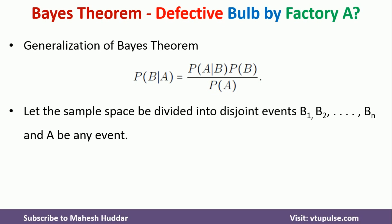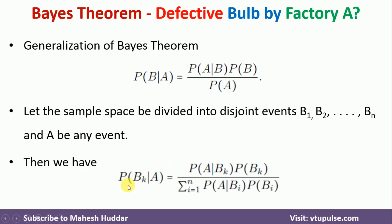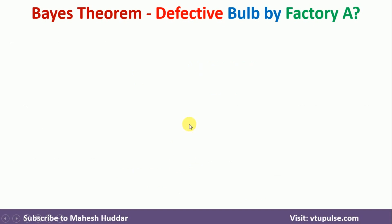When we have multiple events B1, B2, ..., Bn, we use the Generalized Bayes Theorem. The formula is: probability of Bk given A equals probability of A given Bk times probability of Bk, divided by the summation from i equals 1 to n of probability of A given Bi times probability of Bi, where there are n disjoint events.